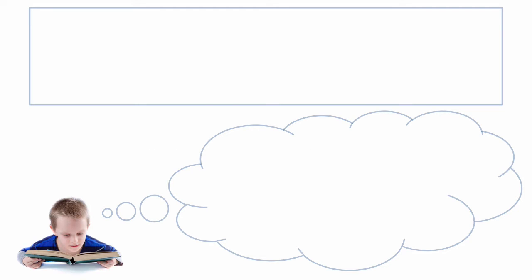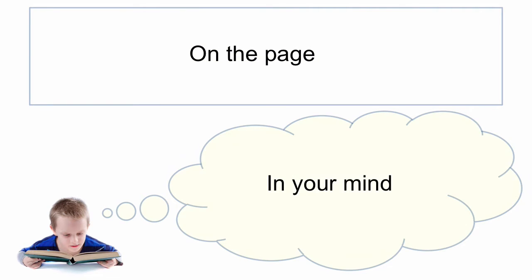While explaining the squaring process, I would like to separate the screen into two parts: on the page, which is the stuff that you'd actually write down while doing the calculation, and in your mind — these are the calculations that you should be doing mentally.